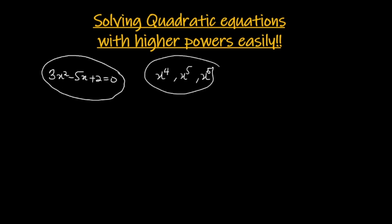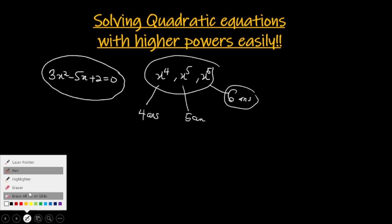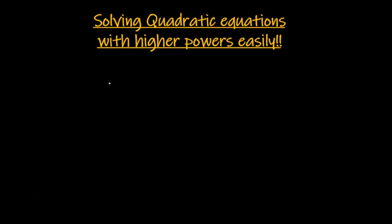In those cases we would expect 4 answers for x, 5 answers, or 6 answers respectively. How do you go around solving this type of equation more easily without complicated calculations? That is the essence of today's video — we want to look at an easy method to solve quadratic-type equations with x raised to higher powers. So let's solve the following equations.